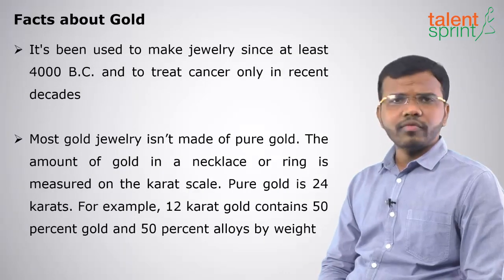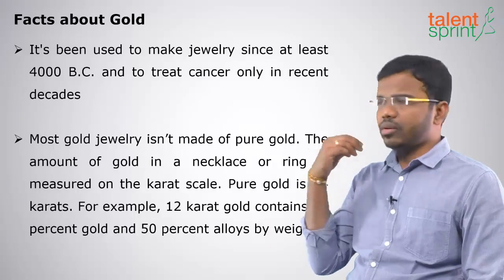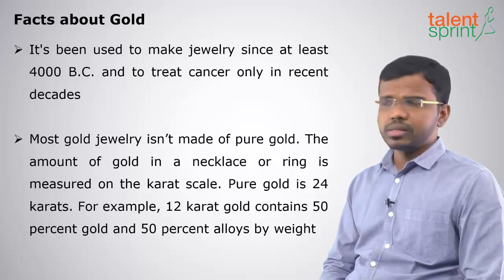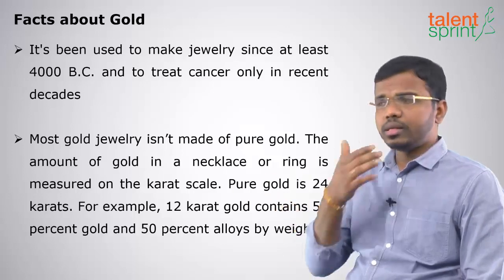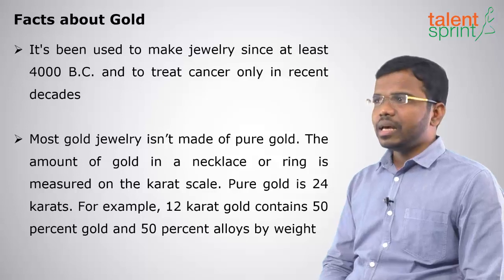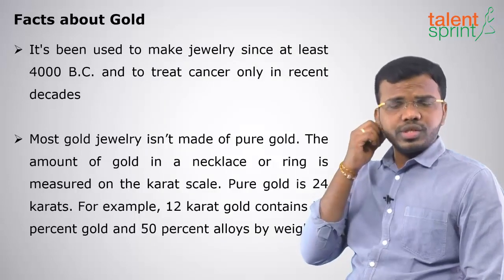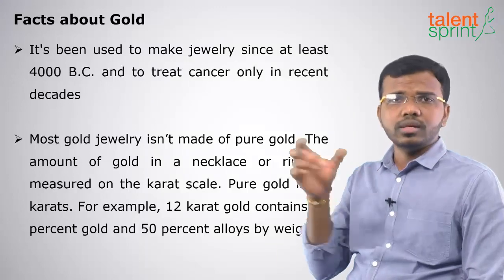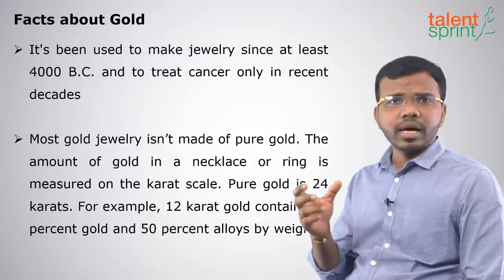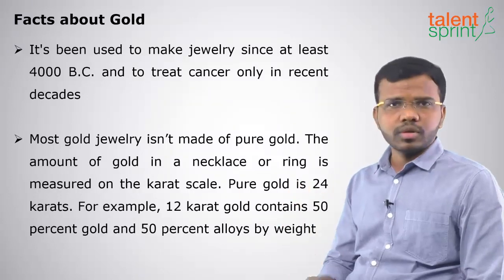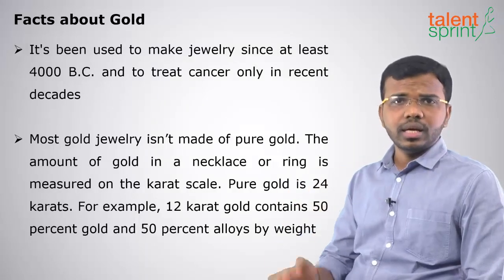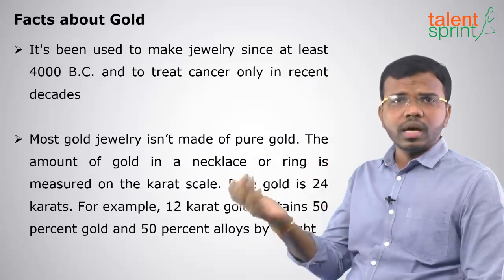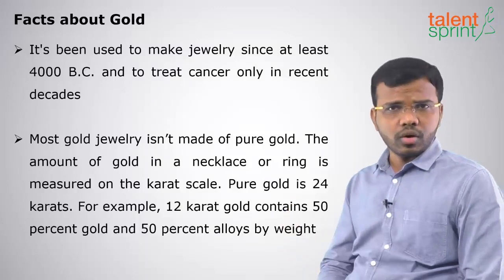What are the facts about gold? Gold is generally made or used for jewelry from 4000 BC onwards. It is also used for cancer treatment in recent decades. Most gold jewelry is measured through its carats. We have 24 carats equal to pure gold. If it is 12 carats — approximately half of 24 — that is equivalent to 50 percentage of gold and 50 percentage of other alloys.